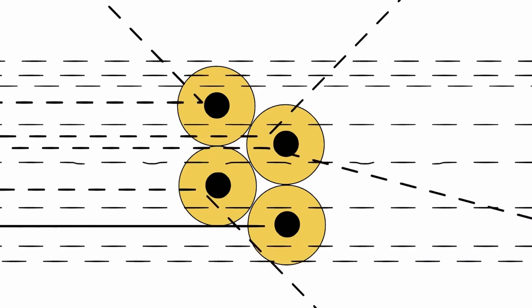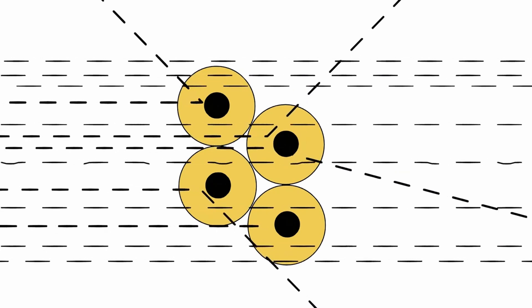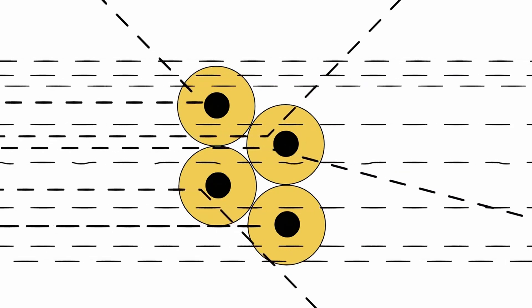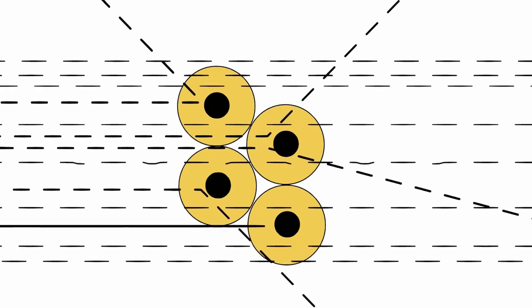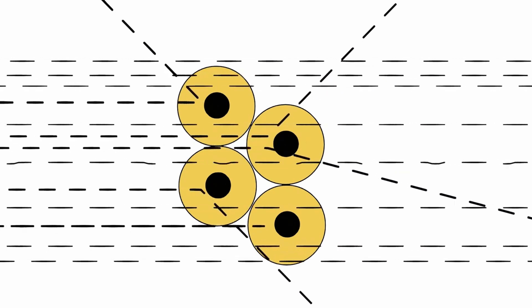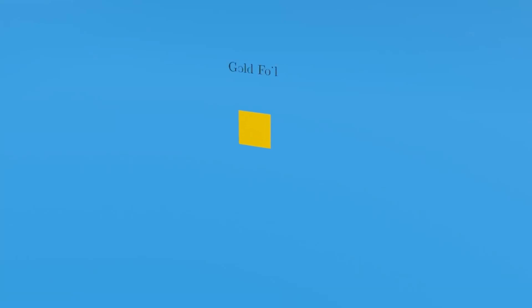Now, you may wonder why Rutherford specifically chose gold for this experiment instead of other metals. The choice of gold is strategic due to its high atomic number. Gold possesses a substantial number of protons and neutrons within its nucleus, contributing to the experiment's success.